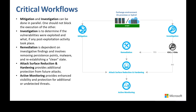Attack surface reduction, hardening, and active monitoring for any additional malicious activity are essential. If the attacker has managed to gain access to privileged identities, there may not be any malware to detect or remove. If your organization requires you to preserve evidence as part of your incident response plan, implement your evidence preservation process.